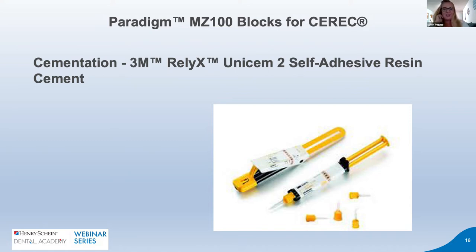Dr. Snyder: composite blocks like the MZ100 are great for avoiding complex direct composite work with Toffelmeyer's, Palodent rings, wedges, and bands. They mill out chairside in three or four minutes with really nice contours - faster than doing it layer by layer by hand. The efficiency of both the Lava Ultimate and MZ100 allows me to go do other dentistry instead of having my head down doing two or three MODs back to back. I try to avoid that whenever possible.